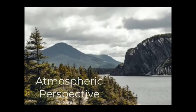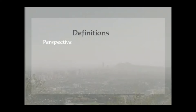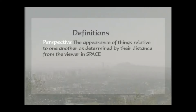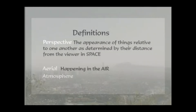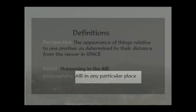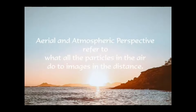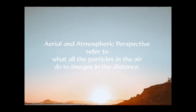Aerial perspective and atmospheric perspective actually mean the same thing. Perspective itself is the appearance of things relative to one another as determined by their distance from the viewer in space. Aerial refers to what's happening in the air; atmosphere refers to the air in any particular place. So aerial and atmospheric perspective refer to all the particles in the air and what those particles are doing to images.